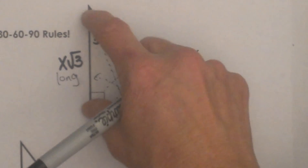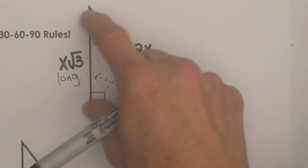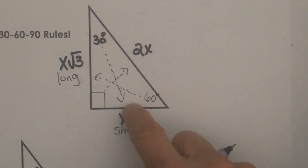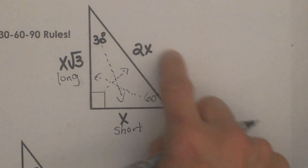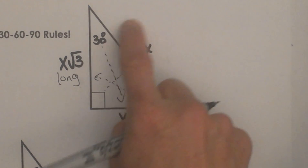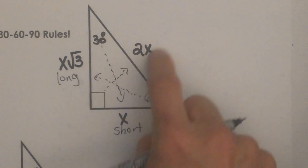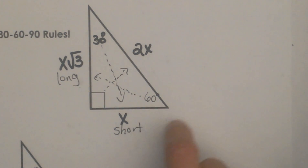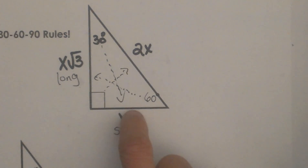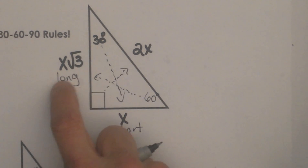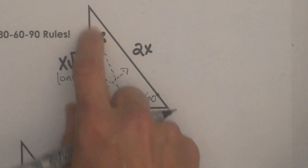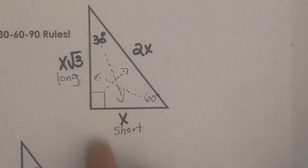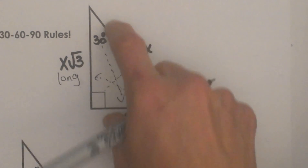If you are given the long leg, you are going to have to do some fancy dividing to get the short leg, and then double it to get the hypotenuse. If you are given the hypotenuse, you can half it to get the short leg, and then multiply by the square root of 3 to get the long leg.